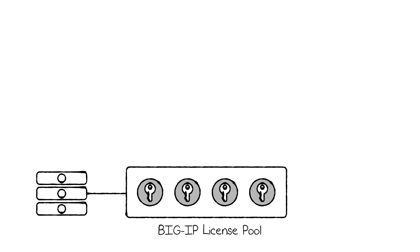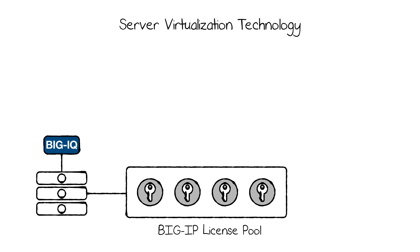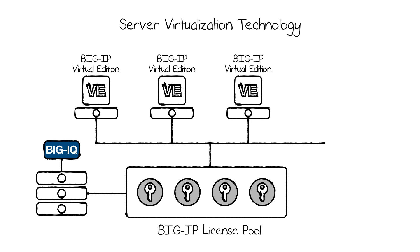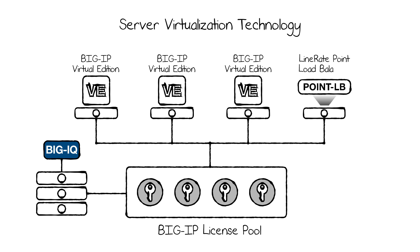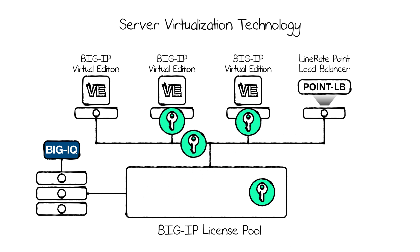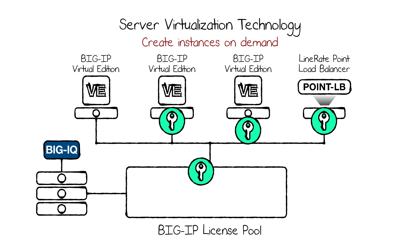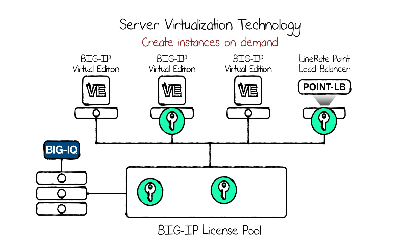You can use server virtualization technology to implement multi-tenancy by creating multiple virtual editions of F5 BigIP or LineRate. This is especially useful when combined with volume licensing and license pools. You can create instances on demand and then recover their licenses back to the pool when no longer required.